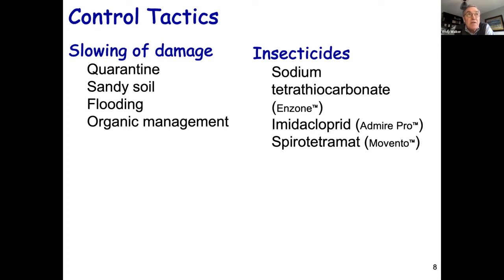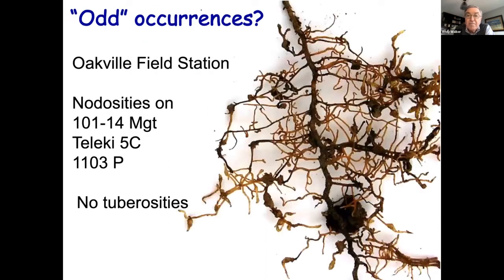With phylloxera, it's more important how you manage the floor and cover crops. Those are normally permanent covers with little disruption, trying to encourage good strong root development. Various current and not-so-current insecticides have been used but haven't been very effective; even some of the downwardly mobile systemics have been tricky to use and really tricky to judge their true efficacy. So again, if you have phylloxera, you should be using resistant rootstocks. That's really the primary take-home message.